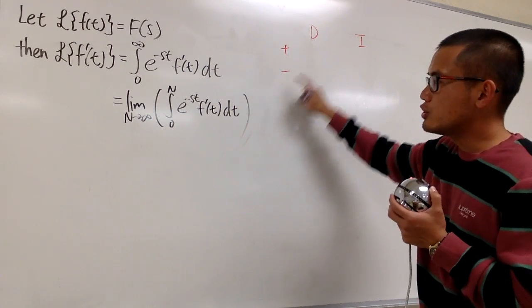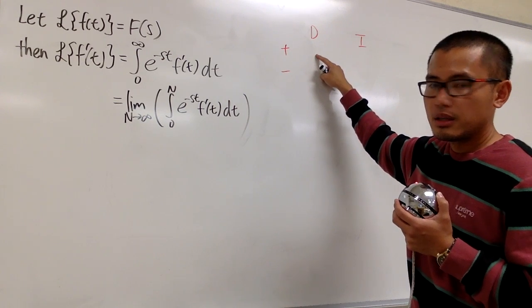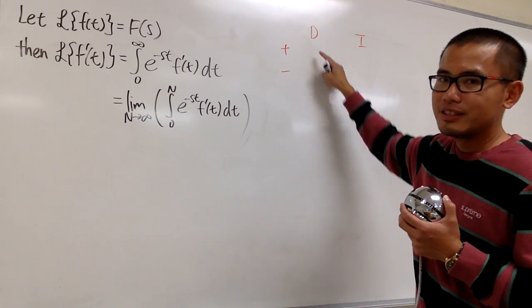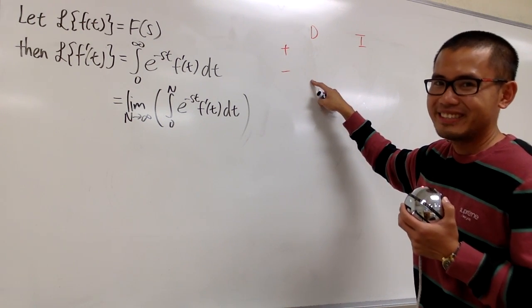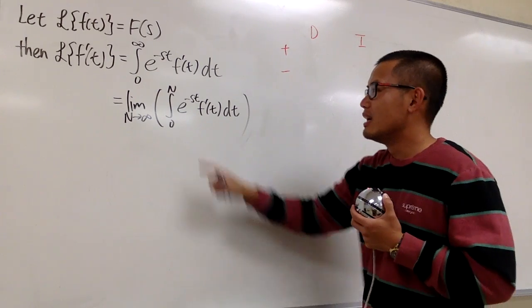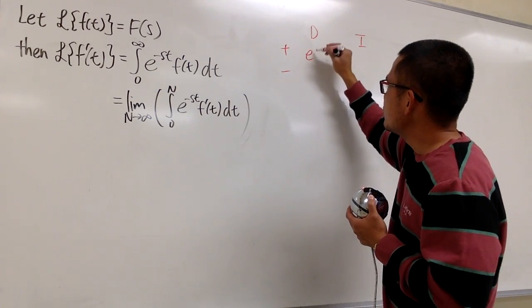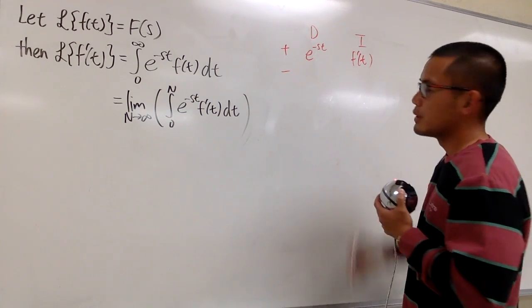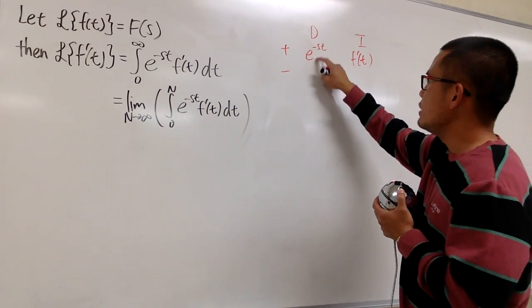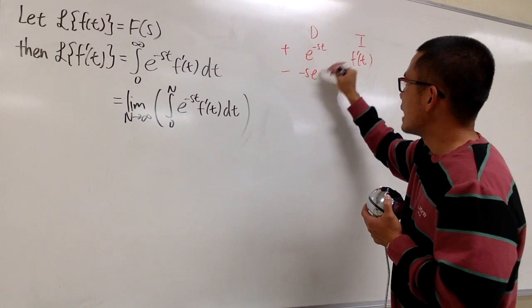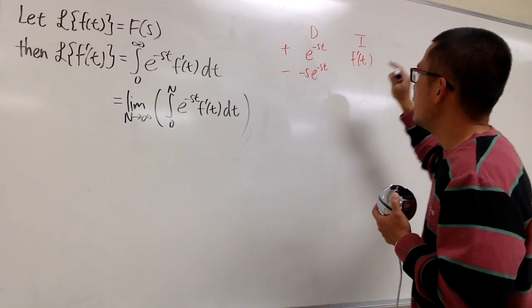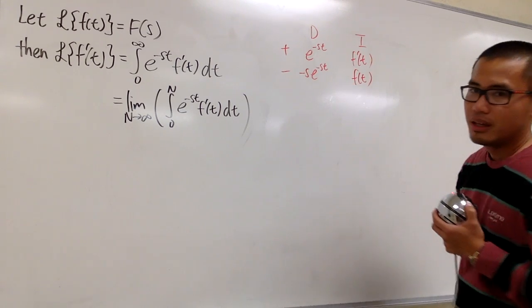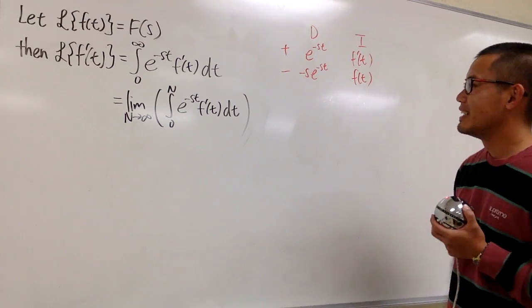What should I choose to differentiate? If I differentiate f prime of t, I'll end up with f double prime of t — that's not good. So let me differentiate e to the negative st and integrate f prime of t. When I differentiate e to the negative st, I get negative s times e to the negative st. And when I integrate the first derivative, I just get back to the original f of t. Wonderful!